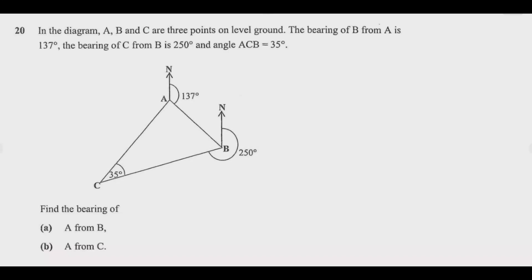Find the bearing of A from B. The bearing of A from B means you go to point B, then you turn from the north clockwise up to the line that is going to A. So it's that angle we are looking for. For us to know that angle, we need to know this angle or we need to know this angle.